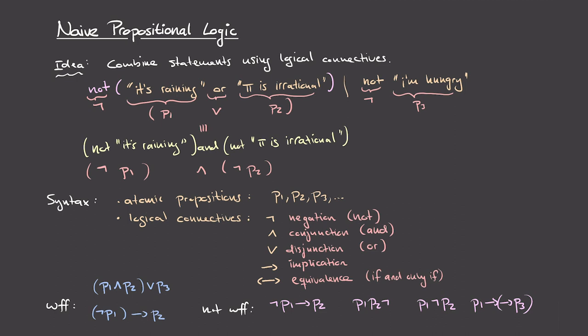The pattern is this: we want to start with some atomic propositions and then apply these logical connectives to them in order to form well-formed formulas, and then we can combine the well-formed formulas we get from that using the logical connectives again to build up more complex formulas. The thing to keep in mind is that negation is a unary operator — it only applies to a single previously established well-formed formula — whereas the other connectives are binary, used in between two previously established well-formed formulas to give a new well-formed formula.